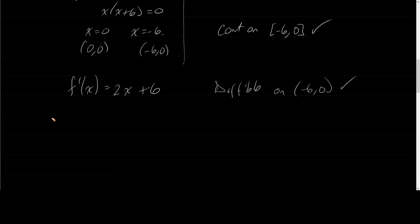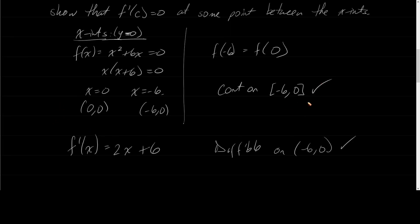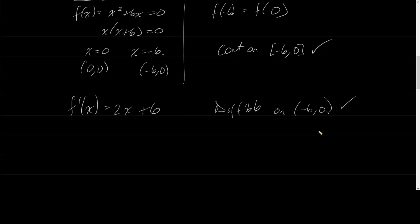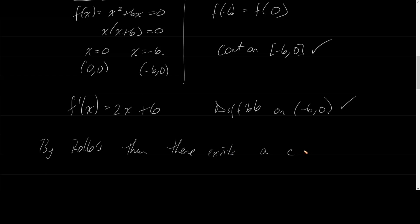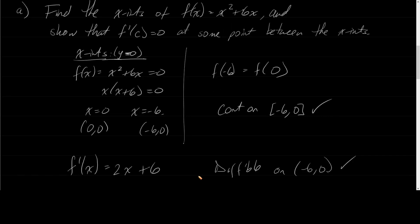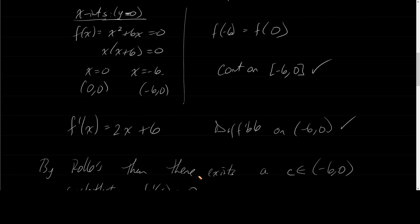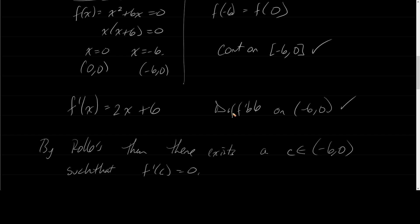We have all three conditions: the endpoints are the same, it's continuous, and it's differentiable. So by Rolle's Theorem, there exists a C in the open interval between negative 6 and 0 such that F prime of C equals zero. The problem asked us to show it exists — and we showed it using Rolle's Theorem.